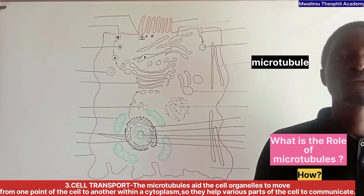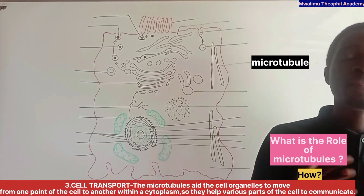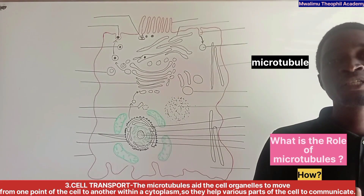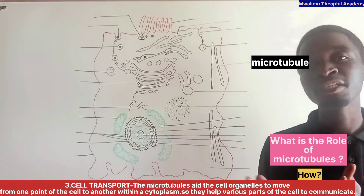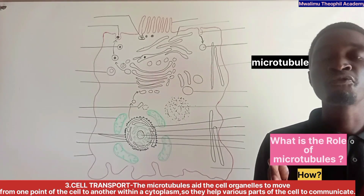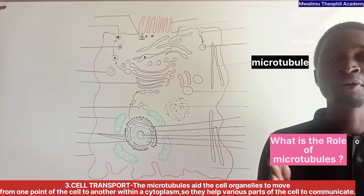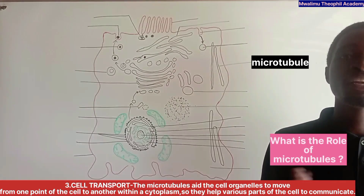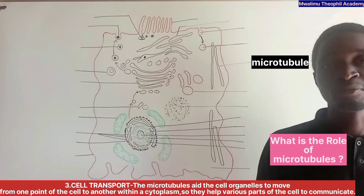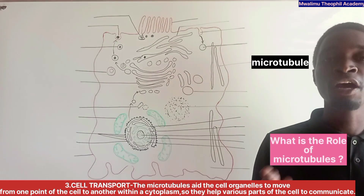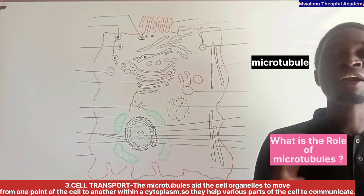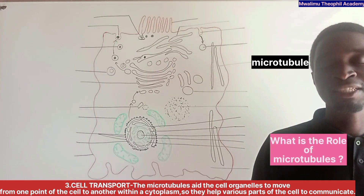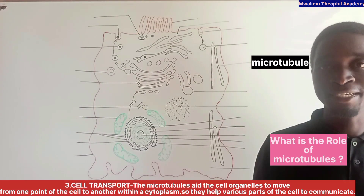Microtubules aid cell organelles to move from one point of the cell to another within the cytoplasm. So they help various parts of the cell to communicate.